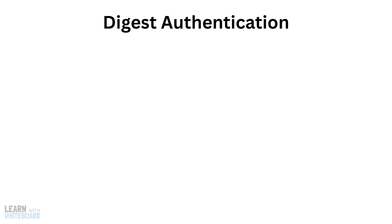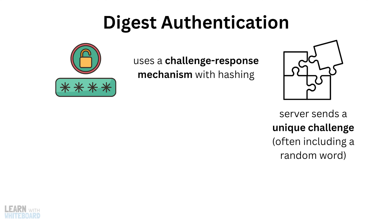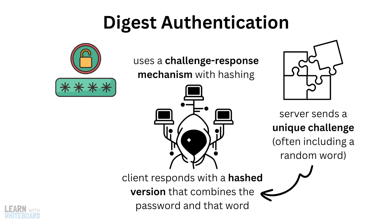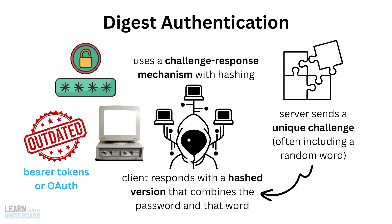One older method is digest authentication, wherein instead of sending your password directly, it uses a challenge-response mechanism with hashing. The server sends a unique challenge, often including a random value, and the client responds with a hashed version that combines the password and that value. This avoids exposing the password directly and makes replay attacks harder. But in practice, it's mostly outdated and replaced by better methods such as bearer tokens or OAuth. Still, you might run into it with older systems, especially in legacy enterprise environments or older web services.